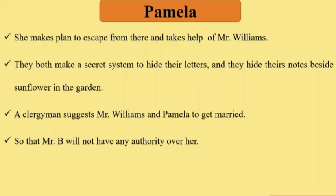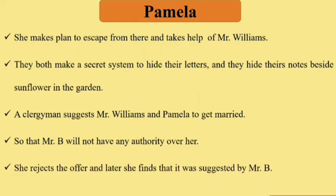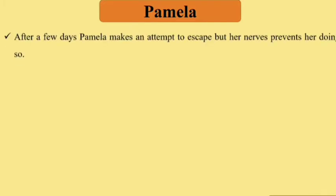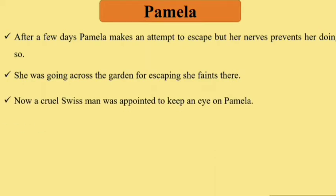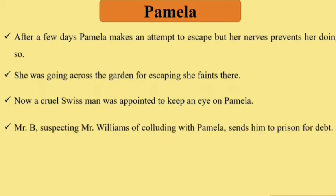She rejects the marriage offer. After a few days Pamela makes an attempt to escape but her nerves prevent her — she faints while crossing the garden. A cruel Swiss man (Colbrand) is appointed to keep an eye on her. Mr. B, suspecting Mr. Williams of colluding with Pamela, sends him to prison on false charges.